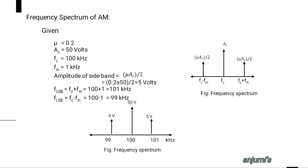For the frequency spectrum of AM, we need to find the amplitude of sidebands and the upper and lower sideband frequencies. Amplitude of sideband = μ × AC / 2 = 0.2 × 50 / 2 = 5 volts. Upper sideband frequency: fUSB = fc + fm = 100 + 1 = 101 kHz. Lower sideband frequency: fLSB = fc − fm = 100 − 1 = 99 kHz. We substitute these in the diagram to get the frequency spectrum.